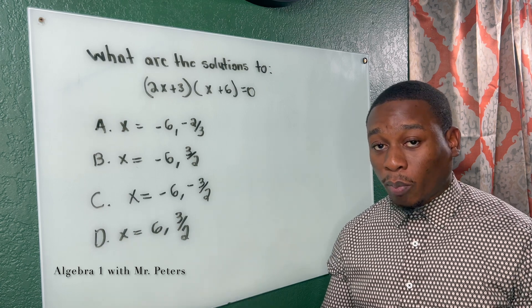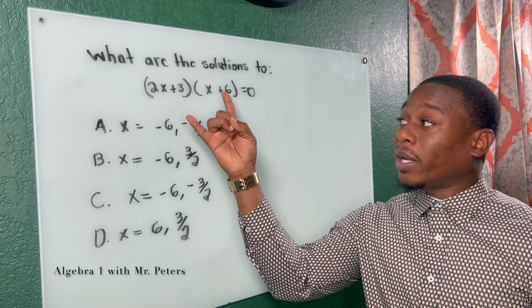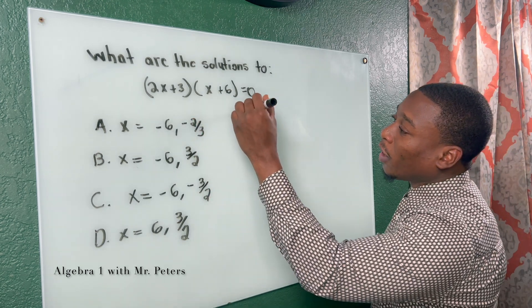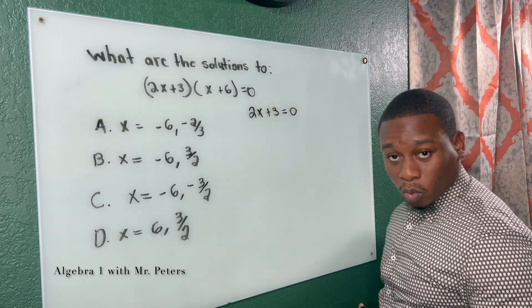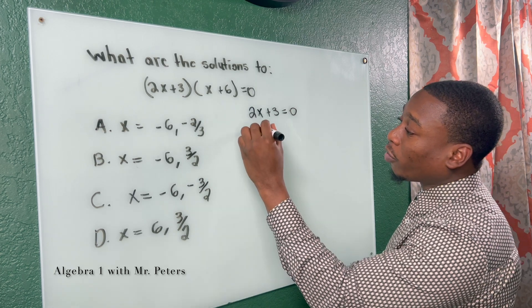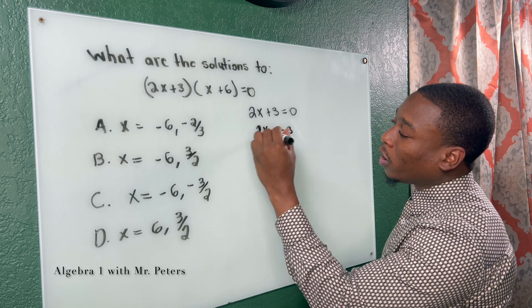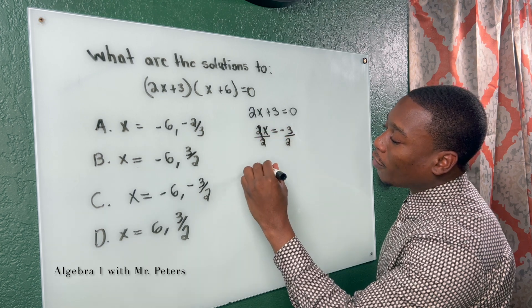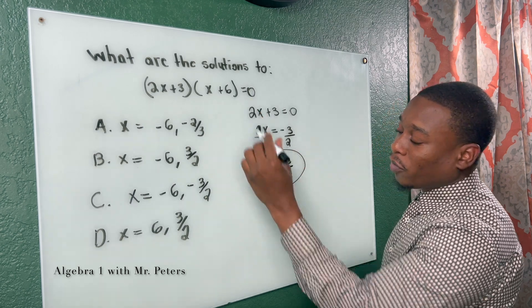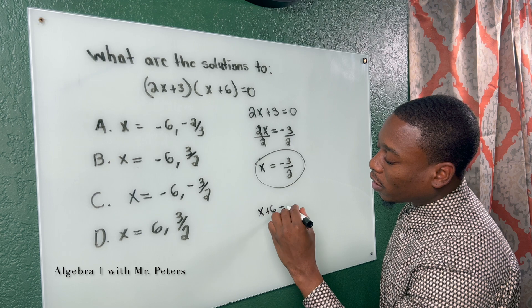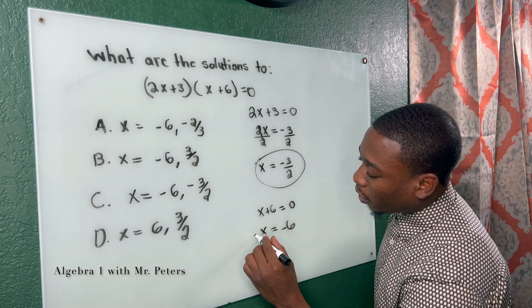This is the same thing as a zero product property. So now that our factors—we had a trinomial and we factor it down to two binomials—what we do is we set this equal to 0 and we solve for x. So 2x plus 3 is equal to 0. I subtract 3 from both sides. We have 2x is equal to negative 3. Once I divide by 2 to get x by itself, I have x is equal to negative 3 over 2. So that's my first x. Second one, we do the same thing. x plus 6 is equal to 0. We subtract 6 from both sides. x is equal to negative 6.